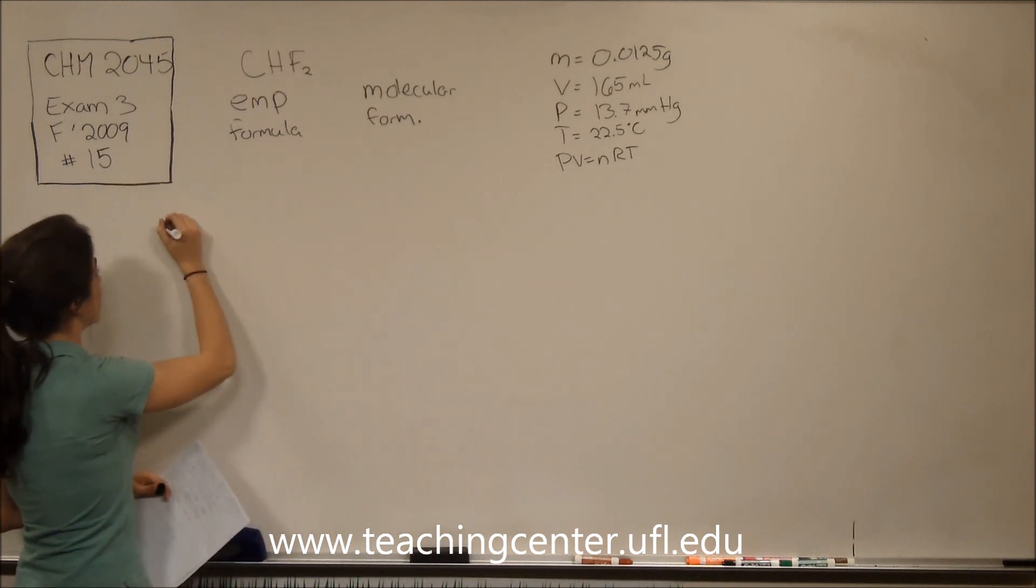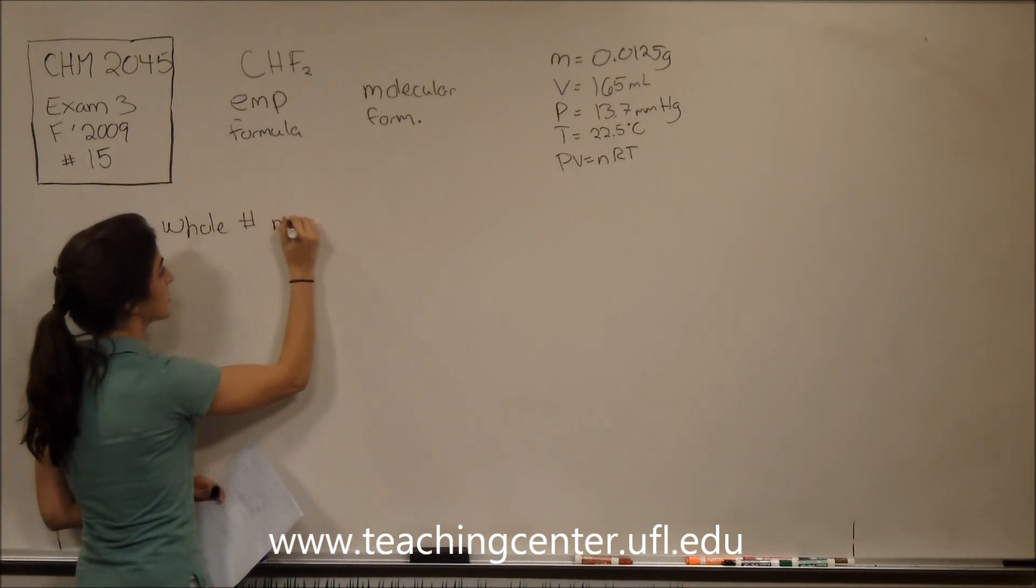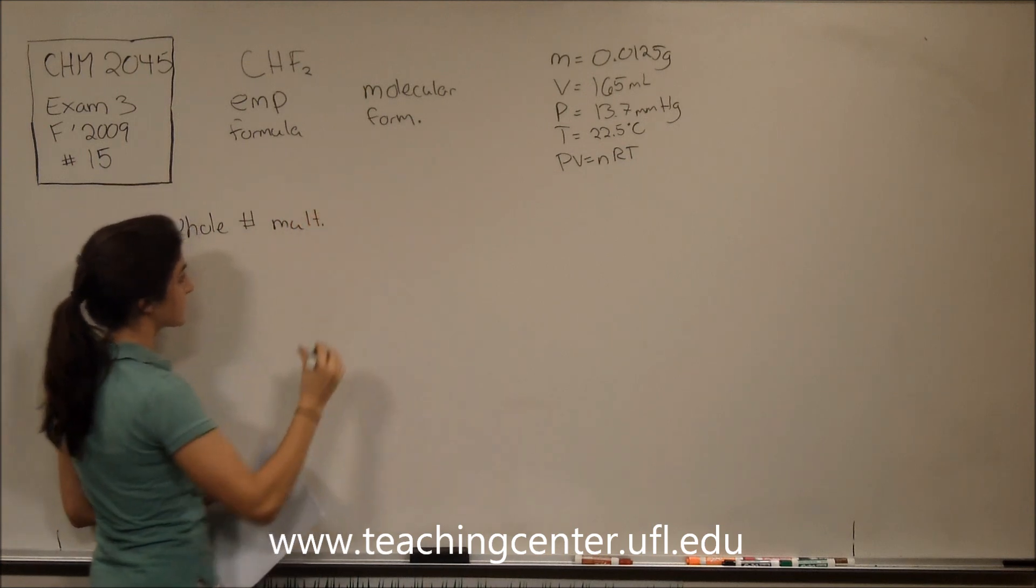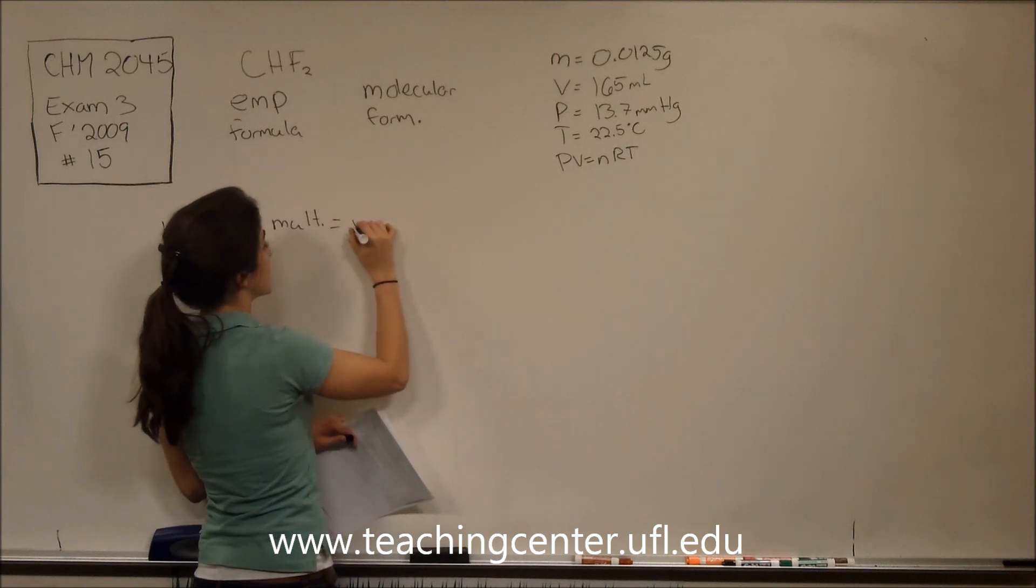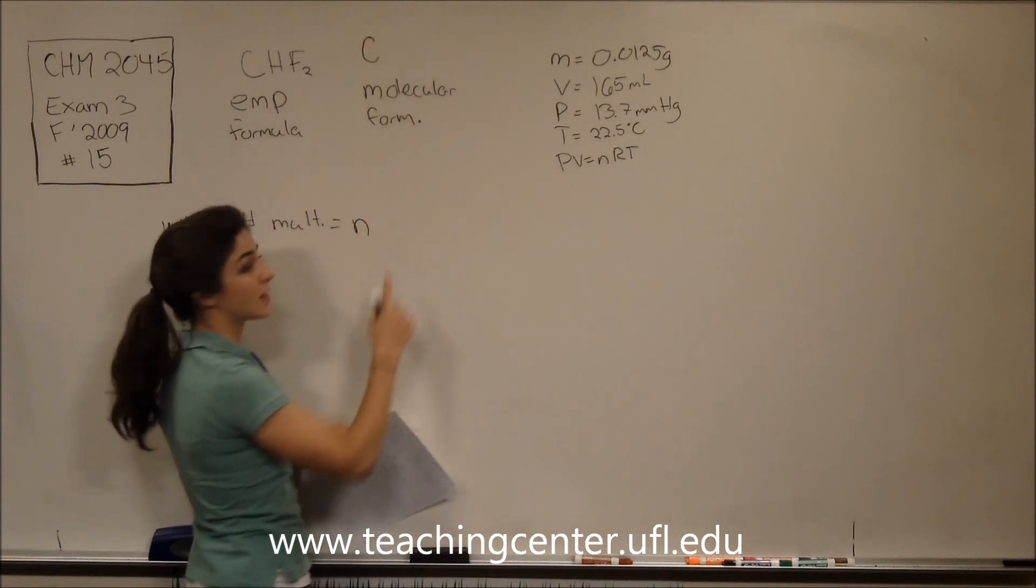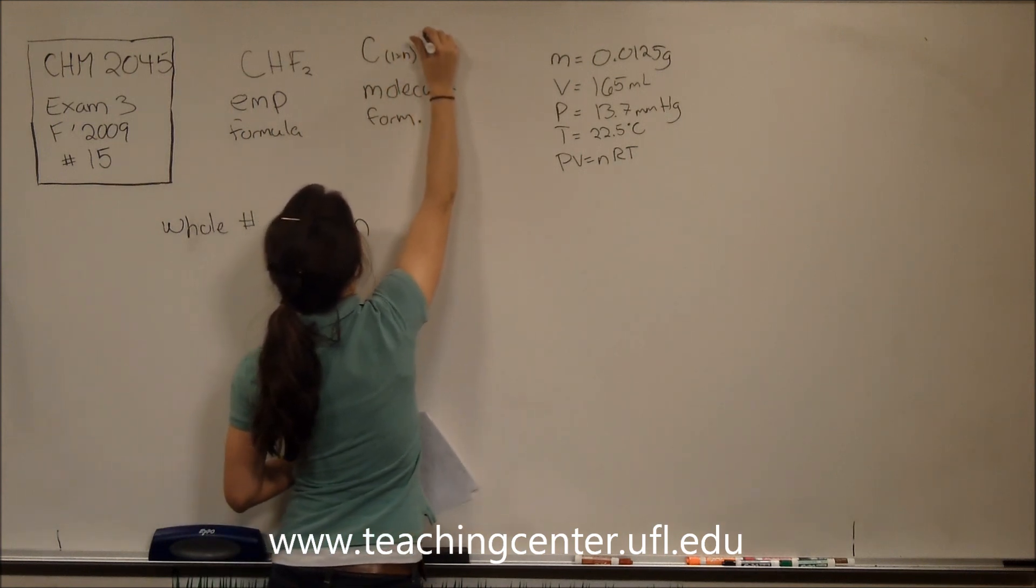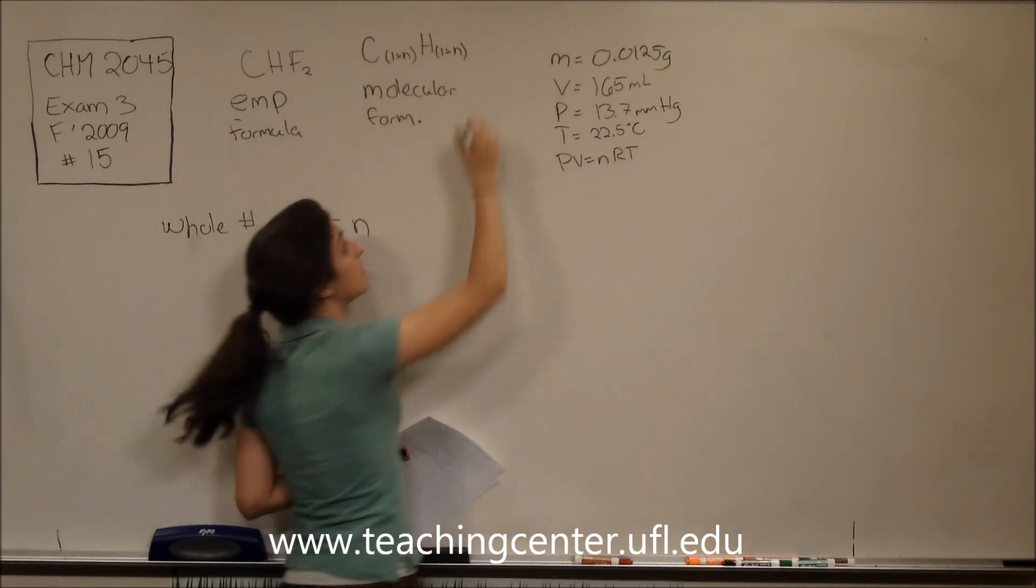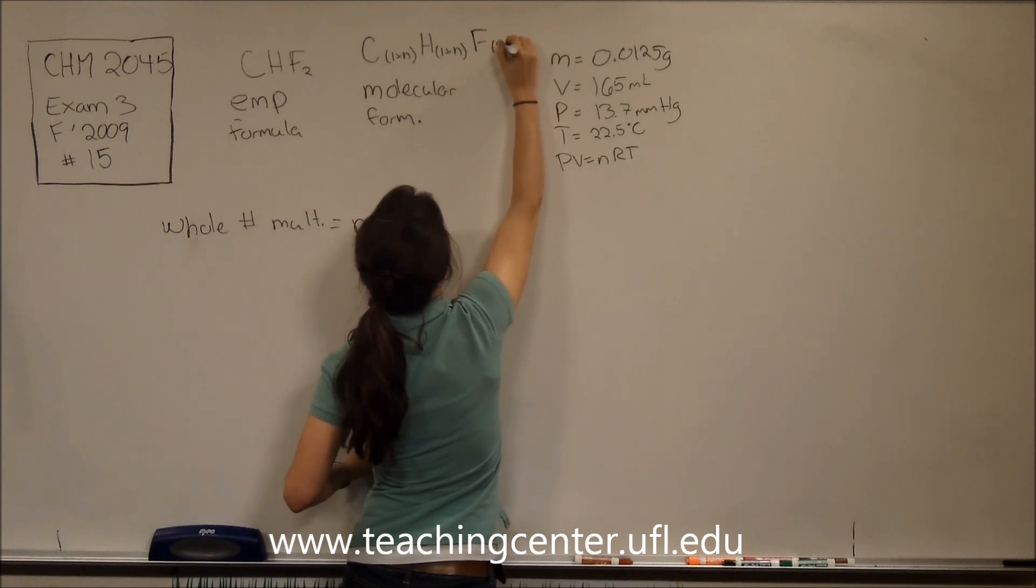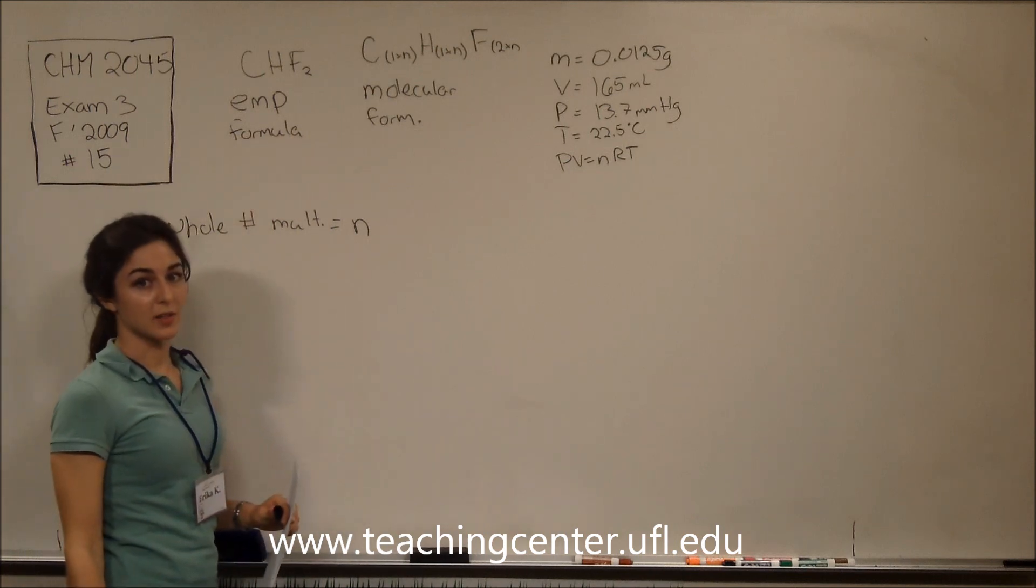So to do this, we have a formula, which is to find the whole number multiple to multiply each atom. This is going to be equal to N, and N in our molecular formula is going to be 1 times N for carbon, 1 times N for H, and then fluorine, which is 2 times N. Each of those numbers I got from this empirical formula equation over here.